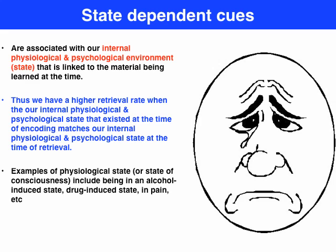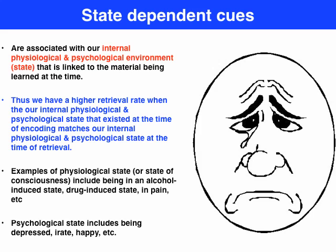By physiological state, we could be talking about an alcohol-induced state, being high, or being in pain. Psychological state could be our mood — being depressed, happy, anxious, irate, etc.